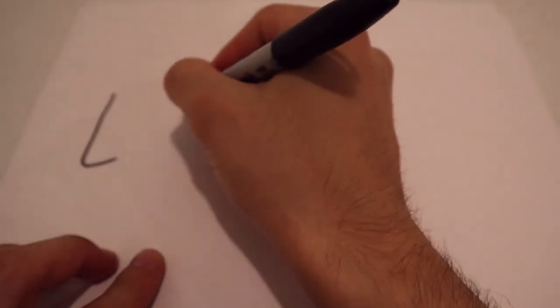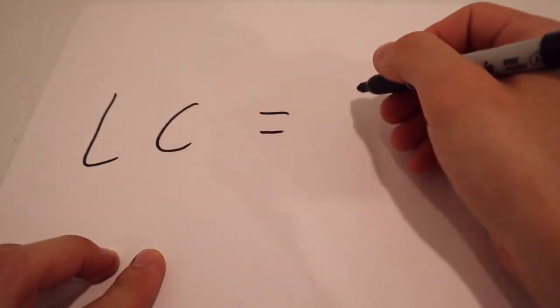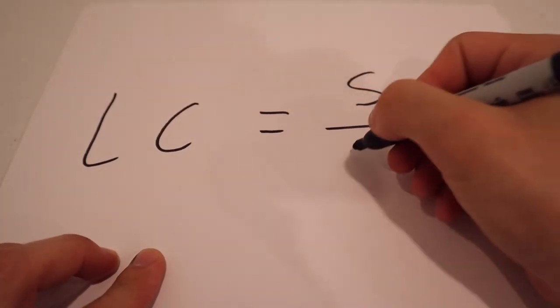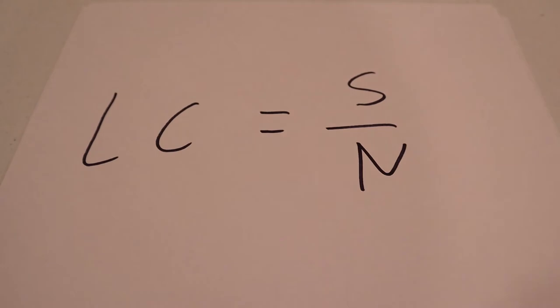Least count LC is equal to the smallest interval on the main scale, S, divided by the number of divisions on the vernier scale, N.